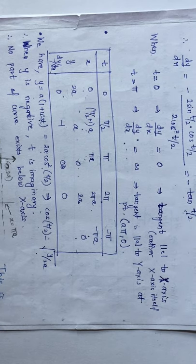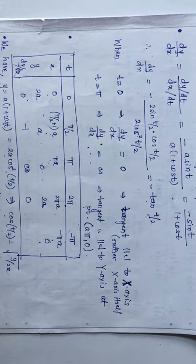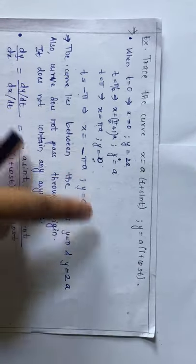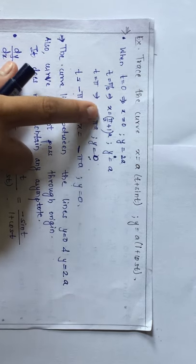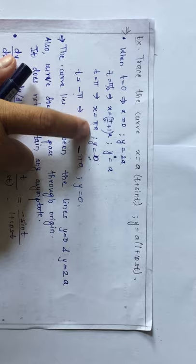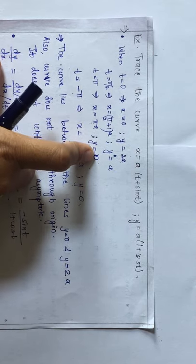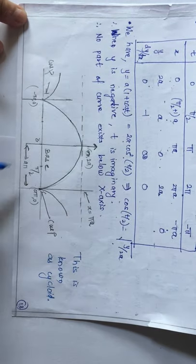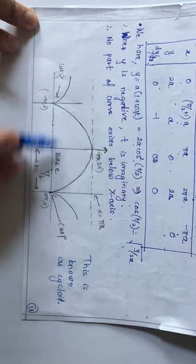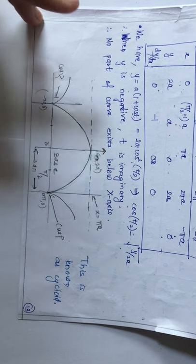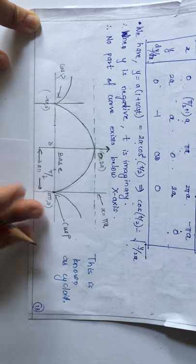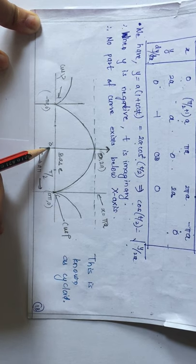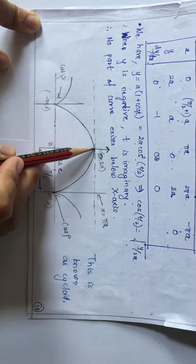So the curve lies with y ranging from 0 to 2a. Drawing the axes: the x-axis is the base, and we mark y = 0 and y = 2a. As x goes from 0 to πa, y decreases from 2a to 0.